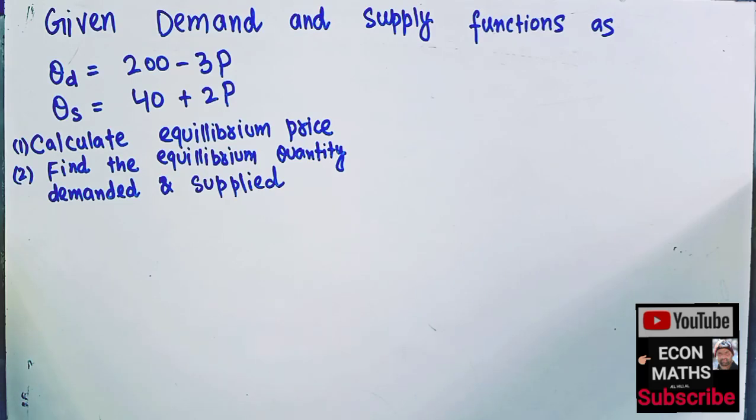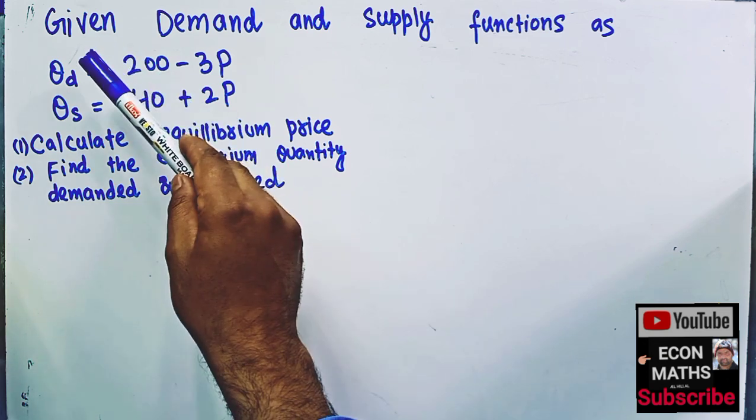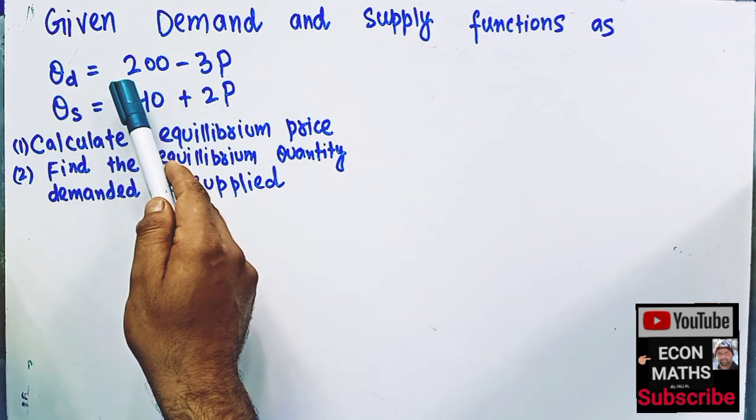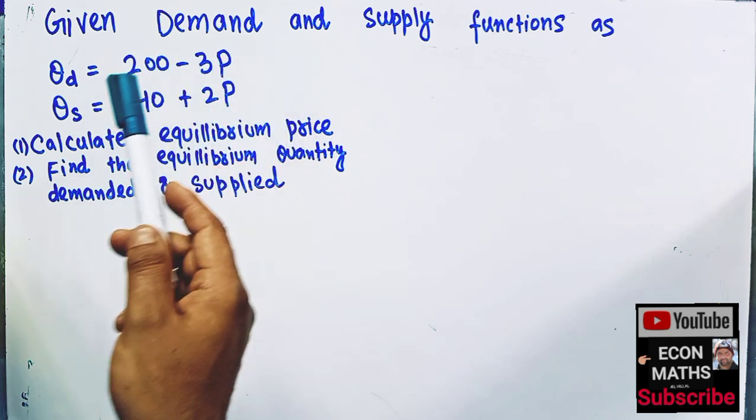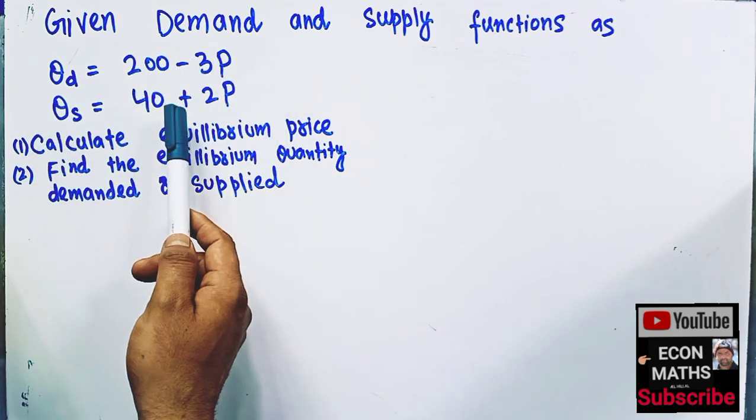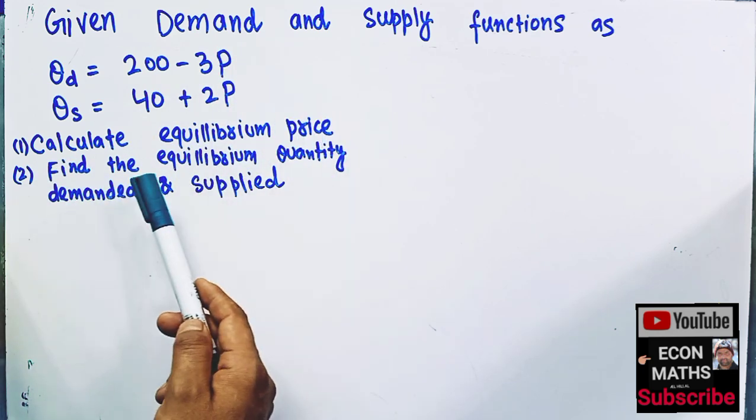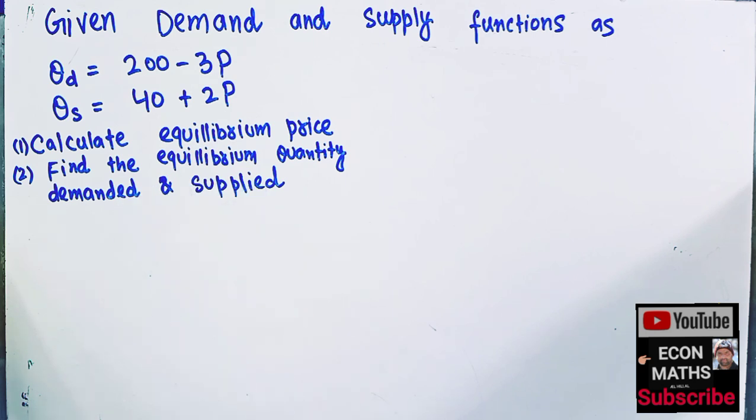Let us solve a basic question on how to find equilibrium price and quantity. The question is, given demand and supply functions: quantity demanded is equal to 200 minus 3P and quantity supplied is equal to 40 plus 2P, where P denotes the price. Calculate equilibrium price and find the equilibrium quantity demanded and supplied.